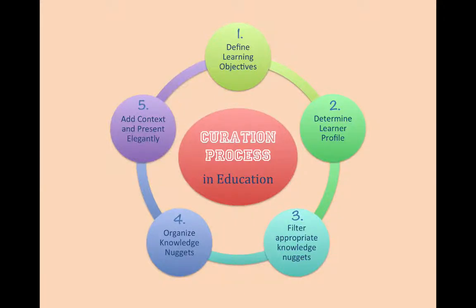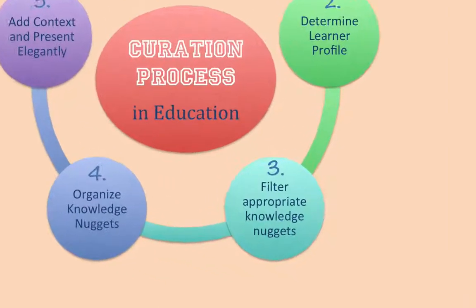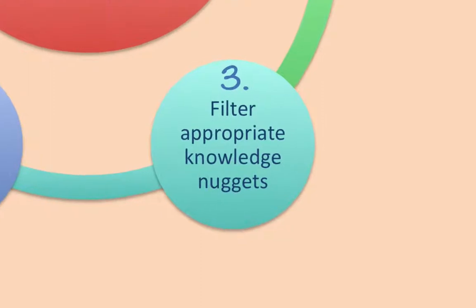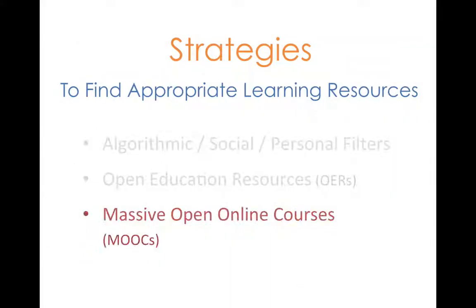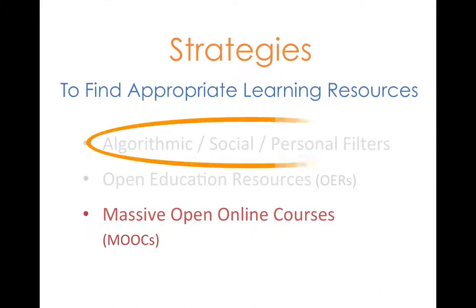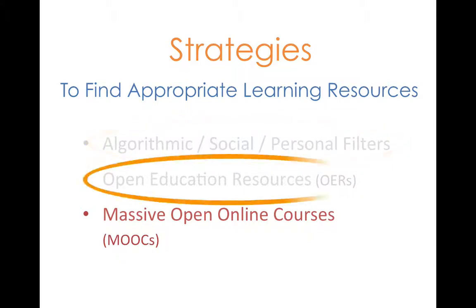In this session, we will discuss the last dimension of step 3 of the curation process, finding appropriate learning resources. In the last three sessions, we have discussed algorithmic, social and personal filters and open educational resources.